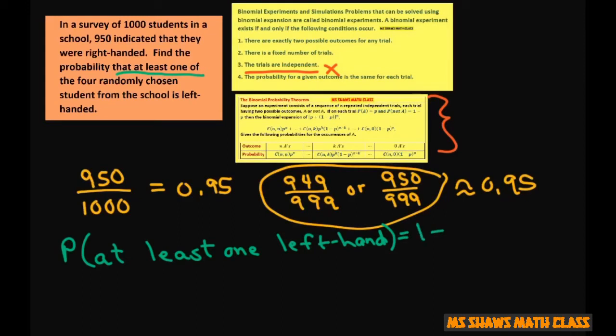Alright. So this is going to equal 1 minus, and we're using this formula here. We're choosing all right-handed and we're choosing 4, so this is going to be 4 choose 4.